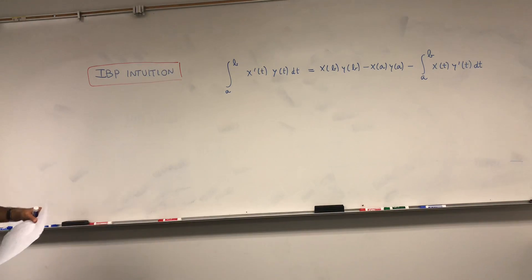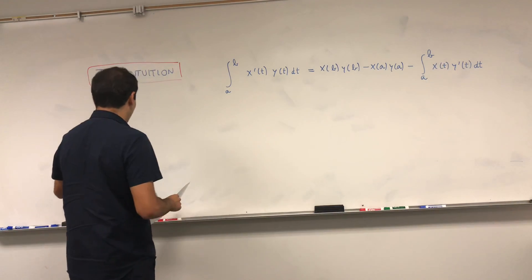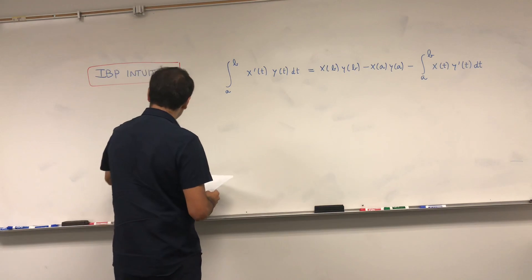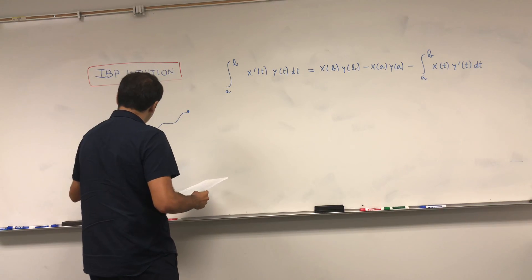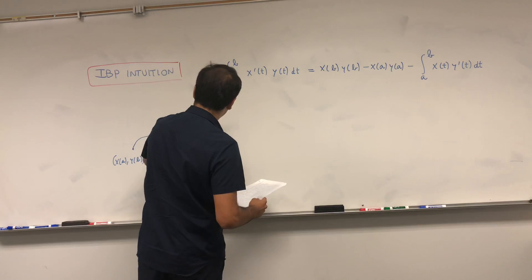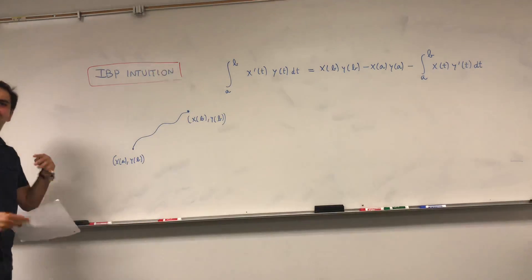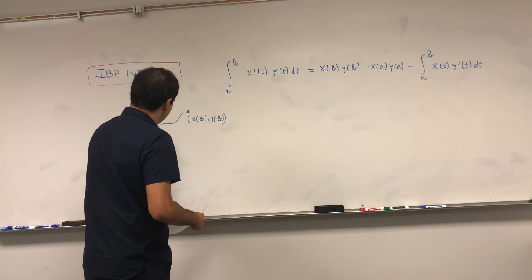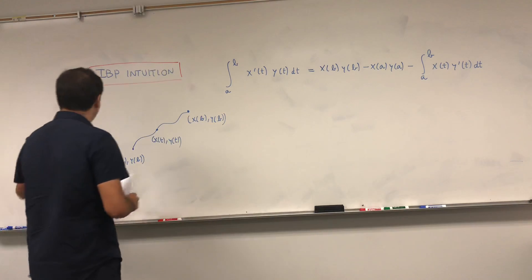I wrote it down using parametric equations, so I'm going to use a little bit of multivariable to motivate this. Suppose you have a parametric curve x of t, y of t that starts at a and goes up to x of b, y of b. This is an intuition — it's not a substitute for proof. The general point is x of t, y of t.